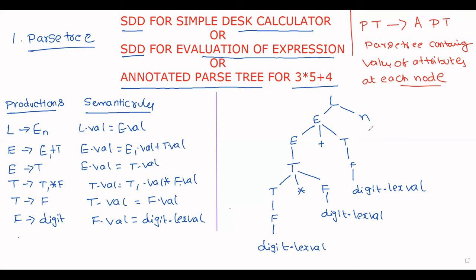Now observe carefully — I am converting this parse tree into an annotated parse tree. First, digit.lexvalue: what is my value? It is 3. So digit.lexvalue equals 3. After that, F.val — since F tends to digit, F.val is assigned the value 3.